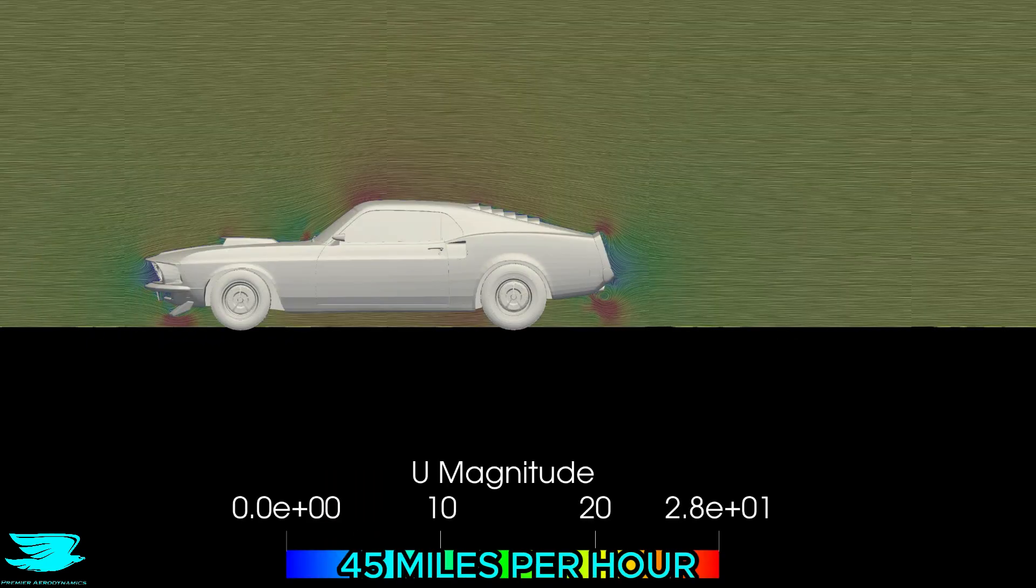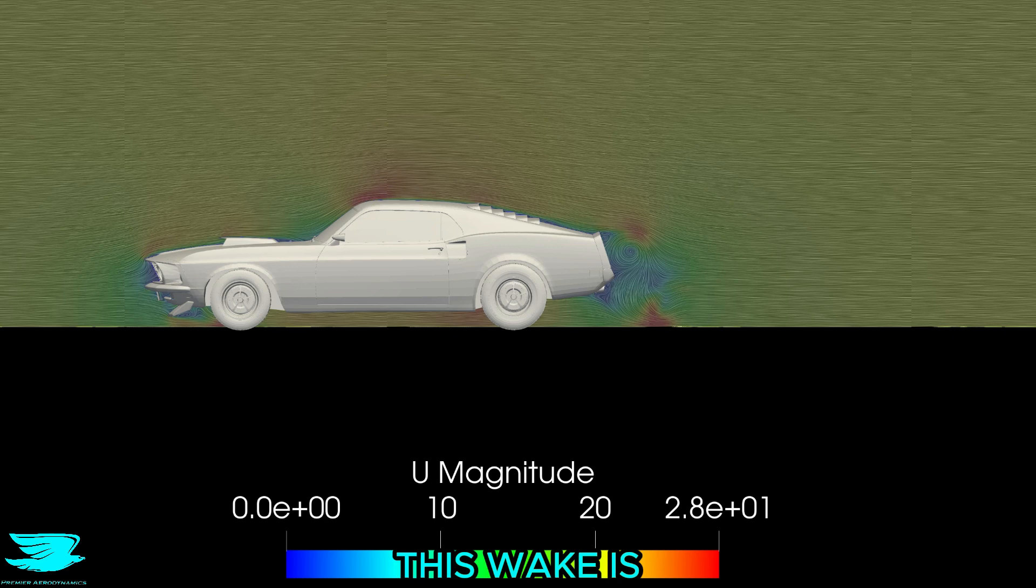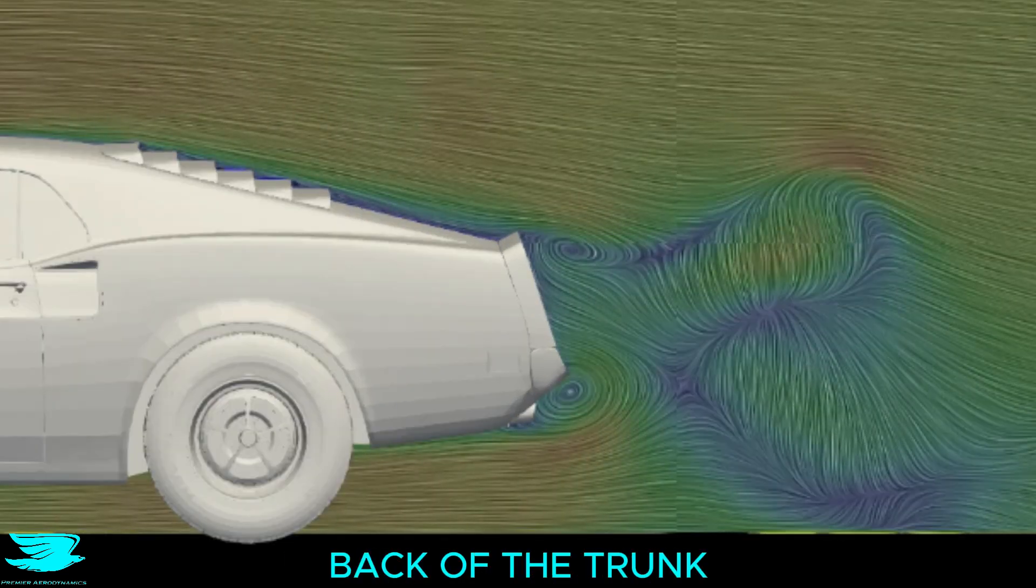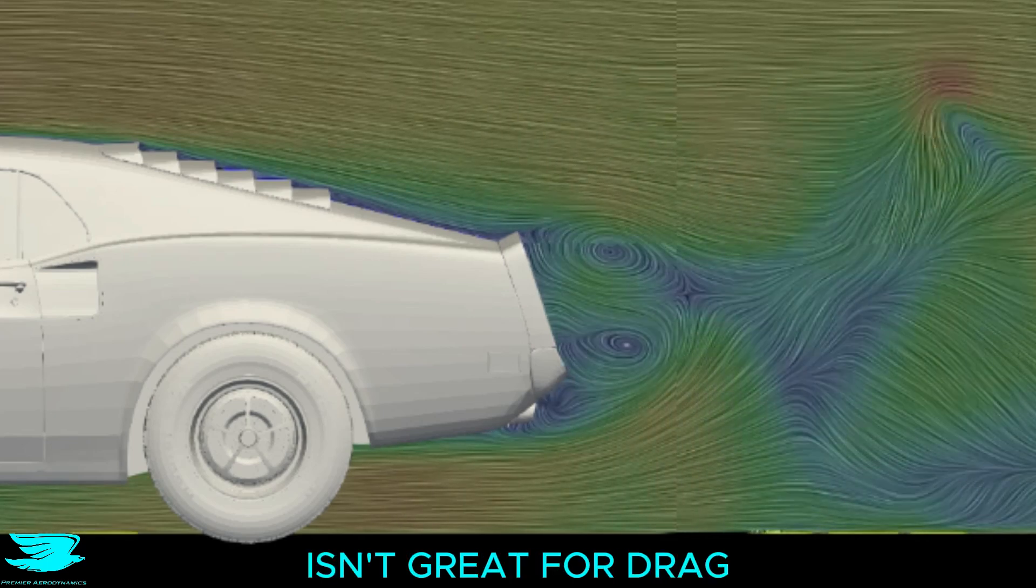It's cruising at 45 miles per hour, and this plane shows that its wake is actually pretty small, but because of the lip at the back of the trunk, several vortices form, which isn't great for drag.